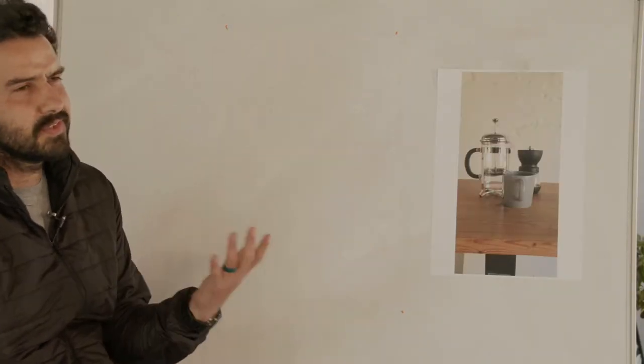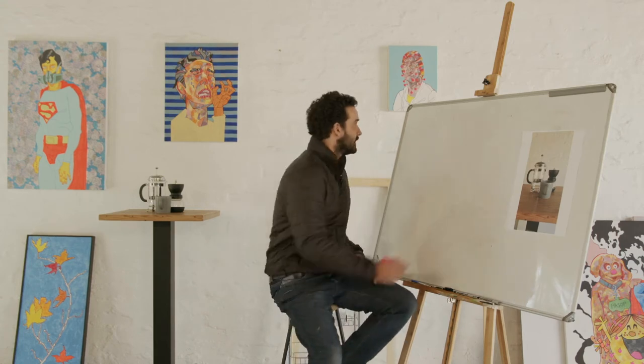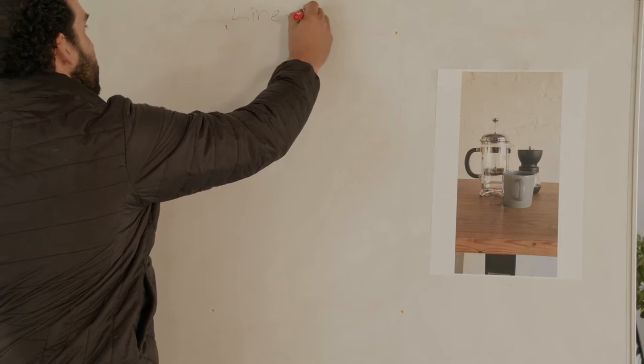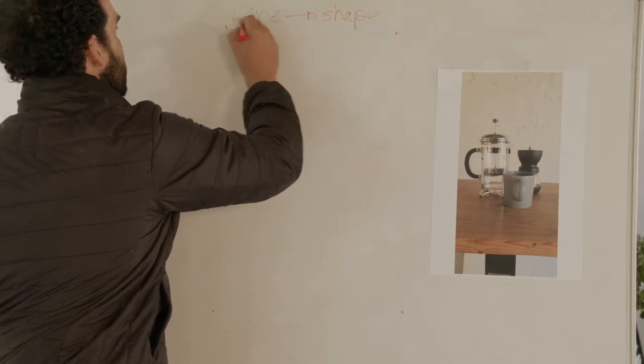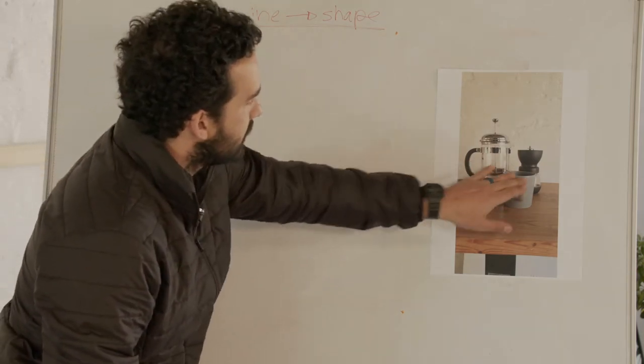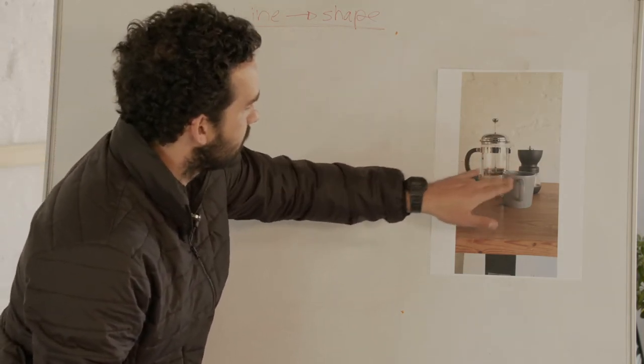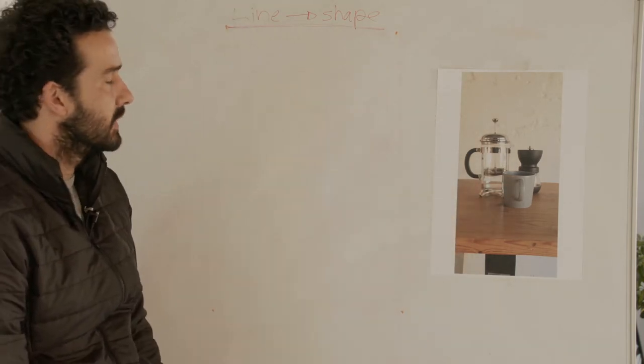Today we're going to be drawing this still life. Just a quick note — with still lifes, lighting is so important, but for today's lesson we're not going to take that into consideration. Maybe for the next lesson we'll look at how to best suggest three-dimensional form, but today we're just looking at structural drawings — the first two steps: line leading to shape. The structural part of a drawing is the most important part; that is where you're going to spend most of your time and focus.